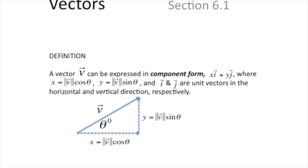In this context, x and y are scalar numbers — they're just constants, not variables. X is the number of spaces you'll go in the x direction and y is the number of spaces you'll go in the y direction, because i and j are unit vectors pointing horizontally and vertically respectively.